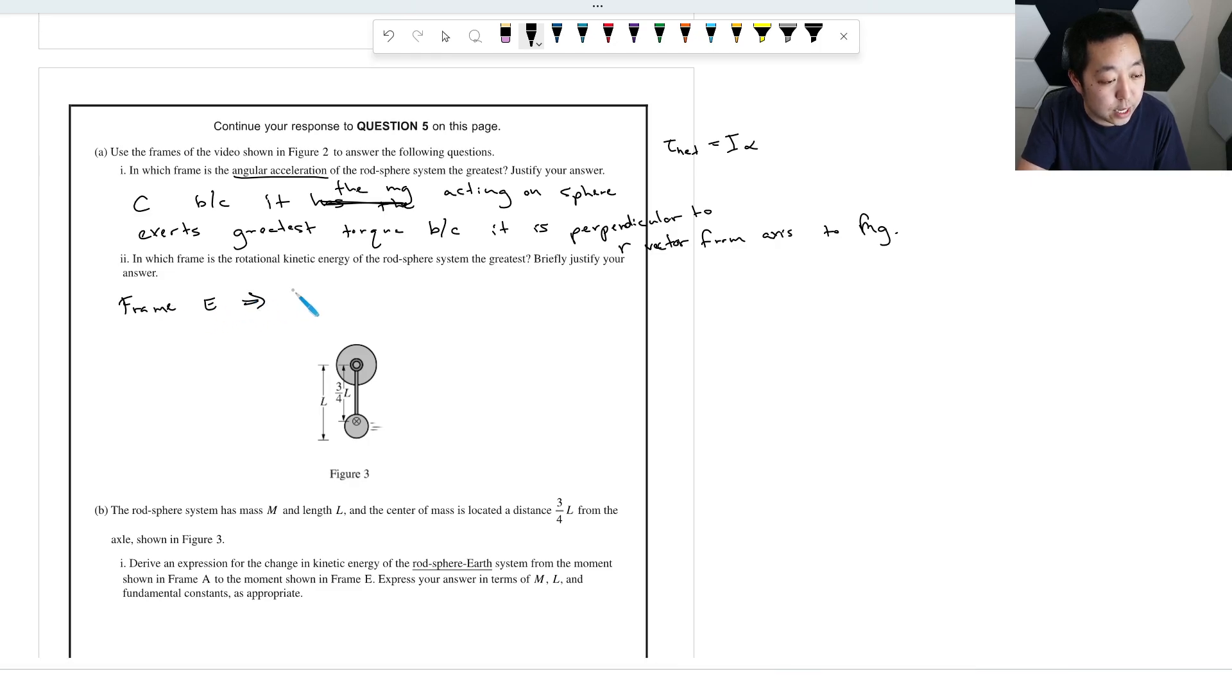And that's because it has the lowest gravitational potential energy, which means it has the highest kinetic energy. And energy is conserved during the motion.